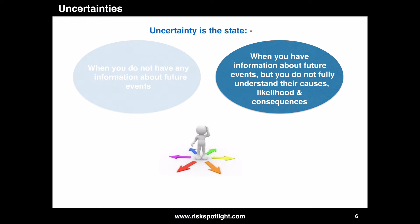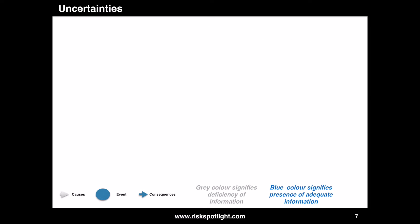Let's now move to the second type of uncertainty, where we have partial information about future events. This is the most common type of uncertainty organizations have to cope with. There are multiple variations of this second type. We will cover these variations by understanding the causes, potential events, and consequences.